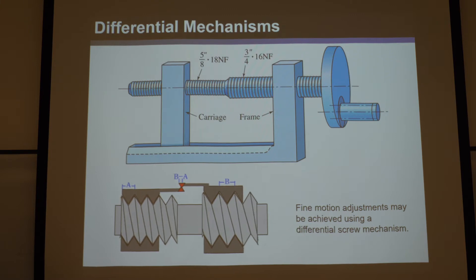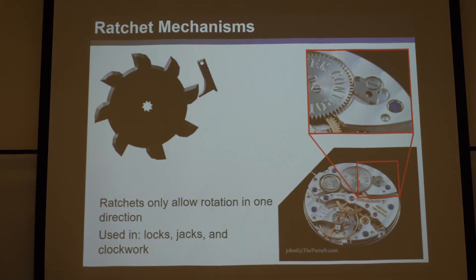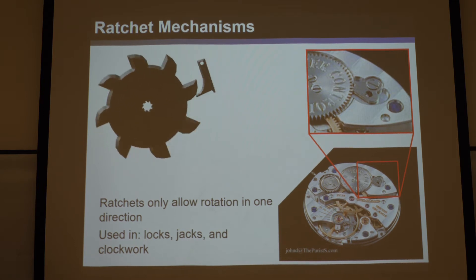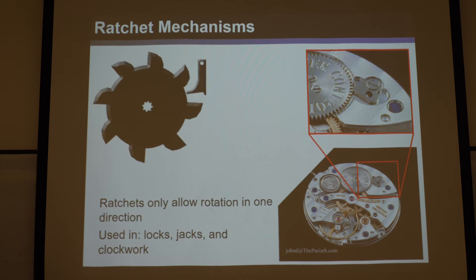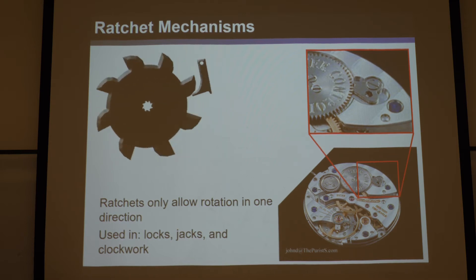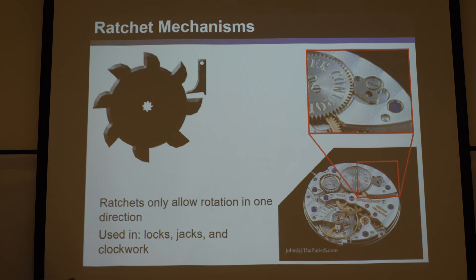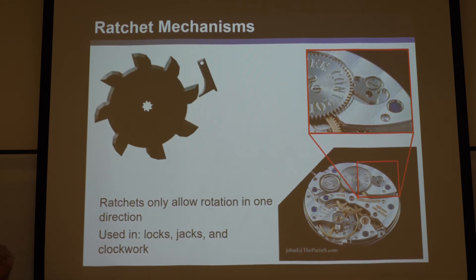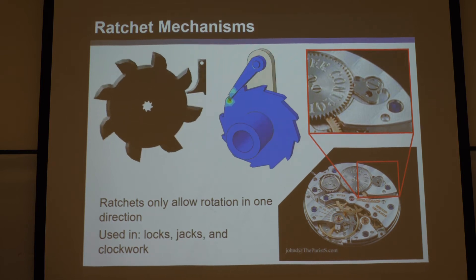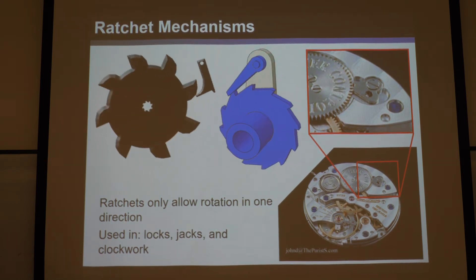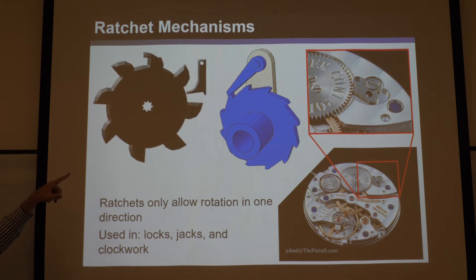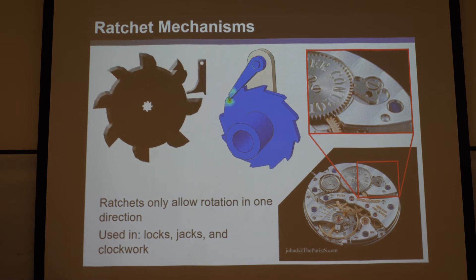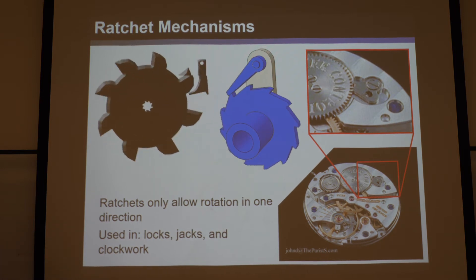This is a ratchet mechanism — like a turnstile. You see them in locks, jacks, and clockwork. They are one-way mechanisms: they rotate freely one way but jam when you try to rotate the other way. A spring holds the mechanism in place. It's a very useful one-way device in mechanical design.